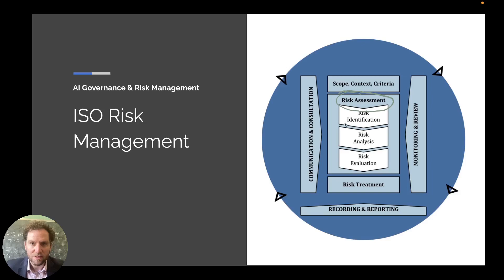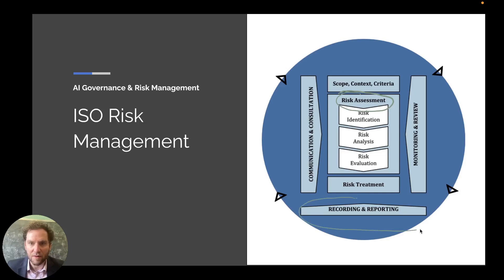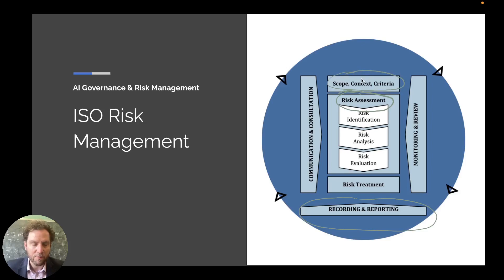We have an entire course on algorithmic risk and impact assessments — how do we identify, analyze, and prioritize risks that are unique to AI systems, autonomous systems, and algorithmic systems? There are also other pieces surrounding this, like recording and reporting. We need to monitor and review, and we also need to communicate these results. And of course, before any of this, there is scope, context, and criteria. A lot of this was covered in our risk management and risk assessment course.